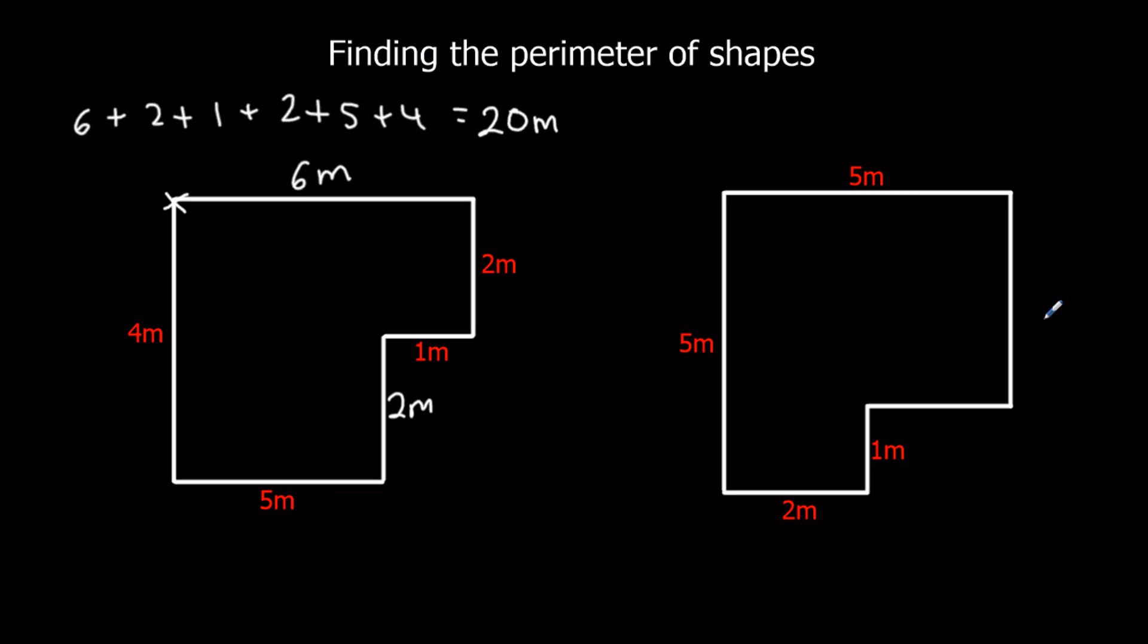And here we've got a missing length, 1 and 5. 5 take away 1 is 4. And we've got 2 along that bit. The whole thing is 5, so this must be a missing 3.